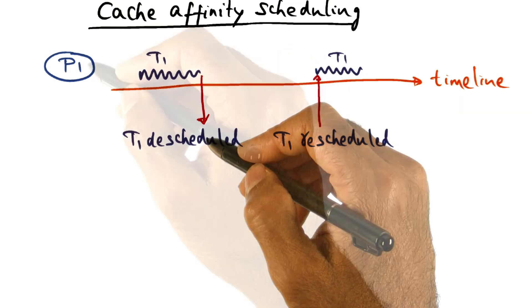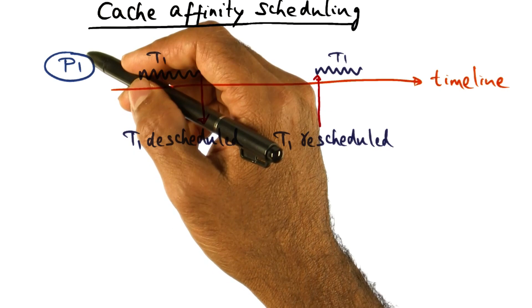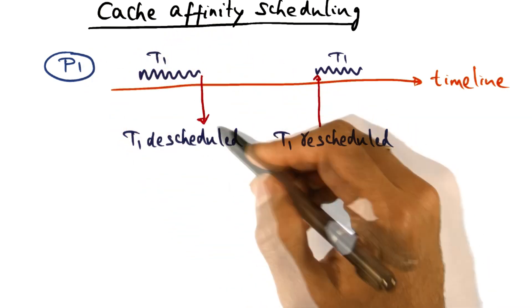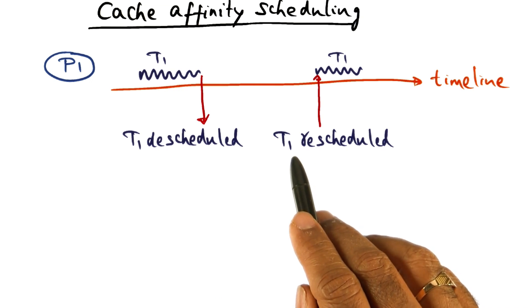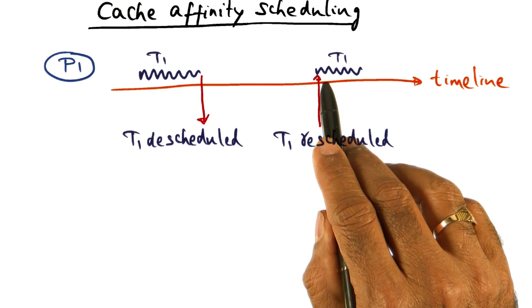And then the scheduler is going to use the processor for perhaps running some other thread. But finally, at some point of time, if T1 gets ready to be scheduled again, it makes a lot of sense for T1 to be scheduled on the same processor.